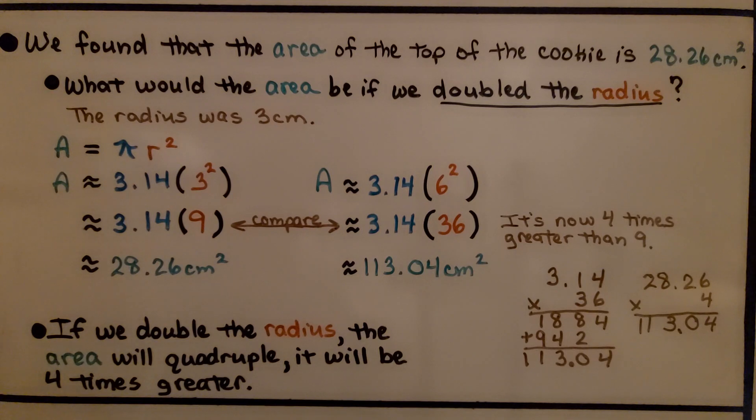So if we double the radius, the area will quadruple. Isn't that something? It will be 4 times greater.